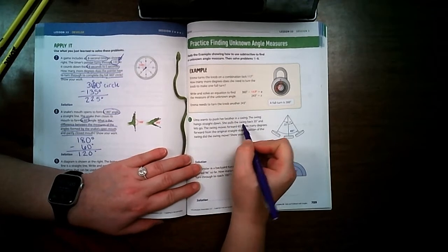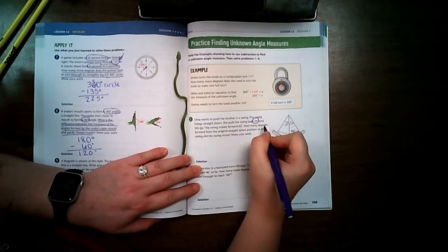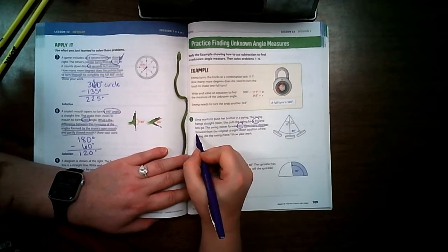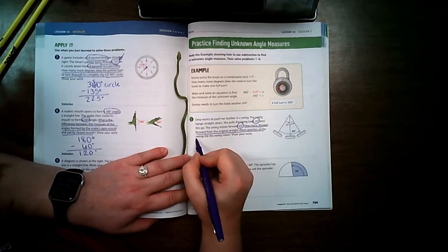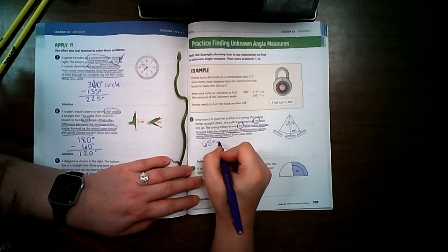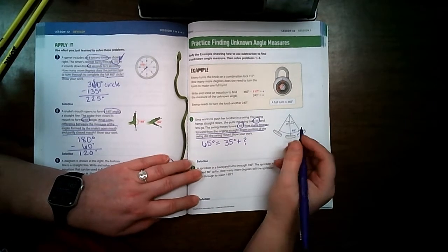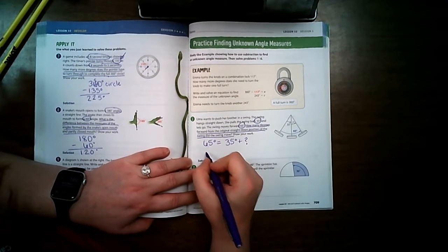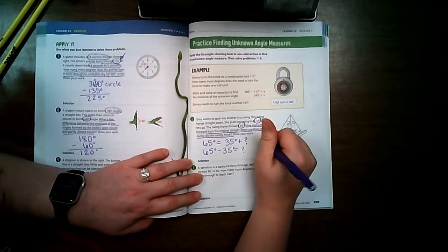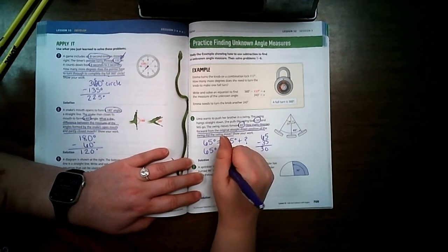Uma wants to push her brother in a swing. The swing hangs straight down. She pulls the swing back 35 degrees and lets go. The swing moves forward 65 degrees. How many degrees forward from the original straight down position of the swing did the swing move? Okay, so we know that we have 65 degrees and then we're going to do 35 degrees plus something we don't know. Or I can say 65 degrees minus 35 degrees equals I don't know. So let's solve it. It's 30 degrees.